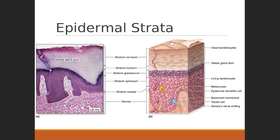All cells superficial to the stratum basale originate from it by mitosis. As soon as one of these cells replicates, the daughter cell is immediately part of the next layer out. If one cell in the stratum basale were to replicate five times, you get a stack of five cells towards the surface, with the oldest one being closest to the surface.